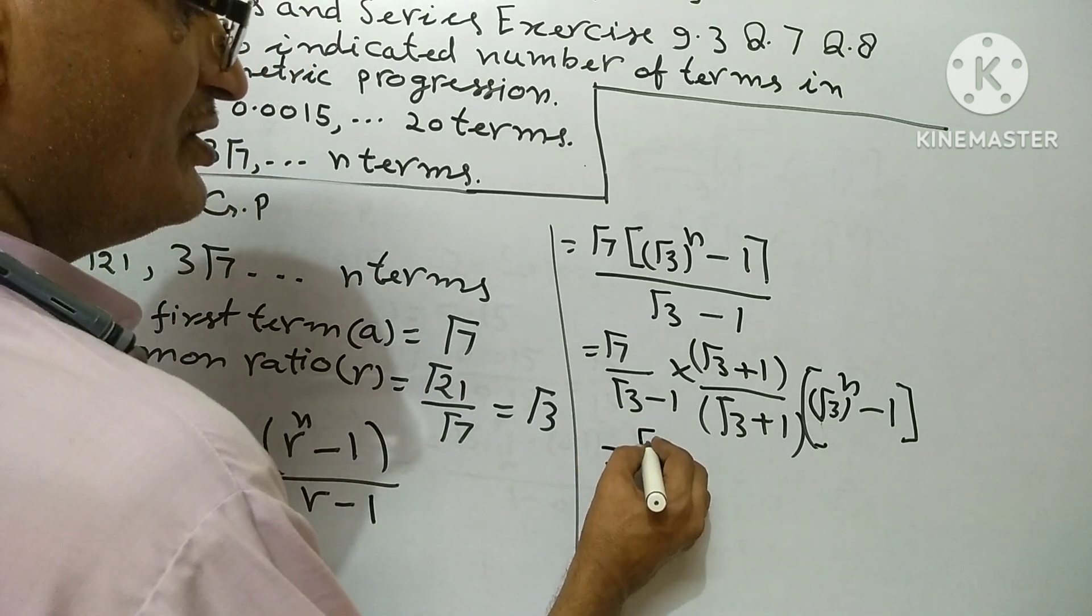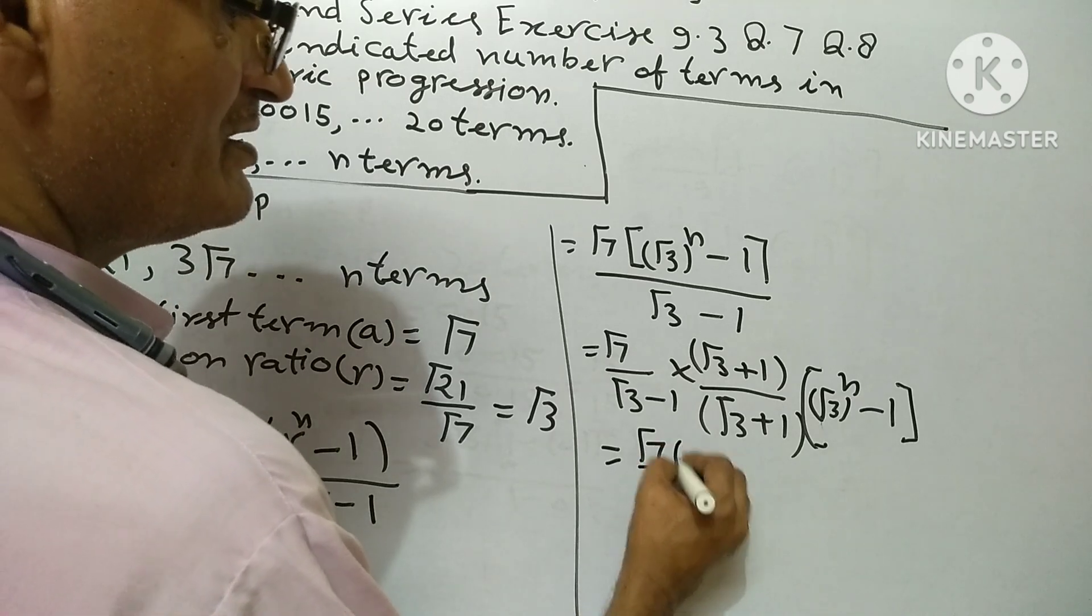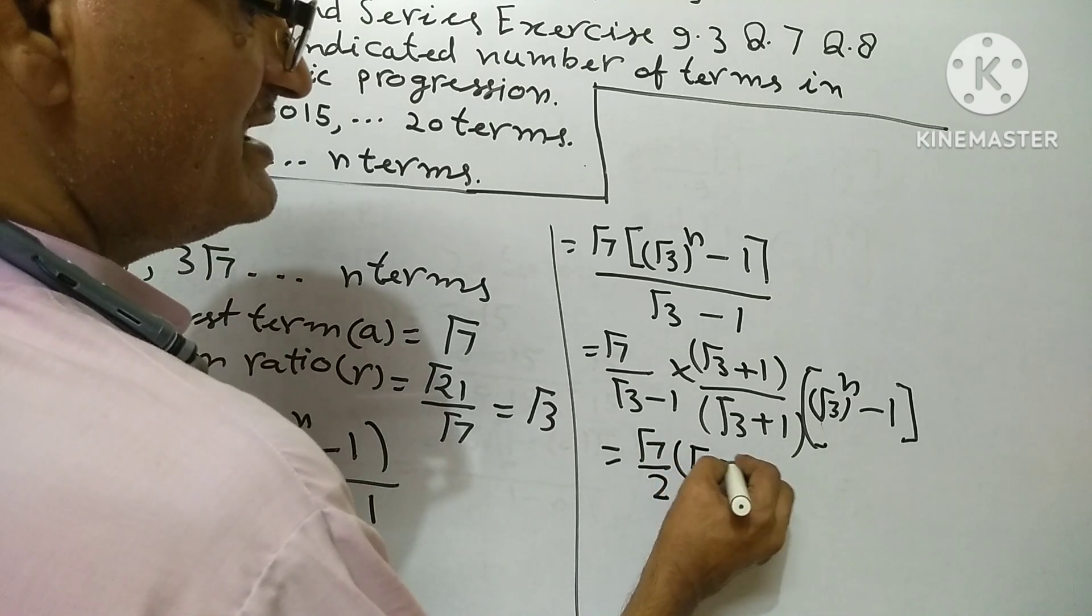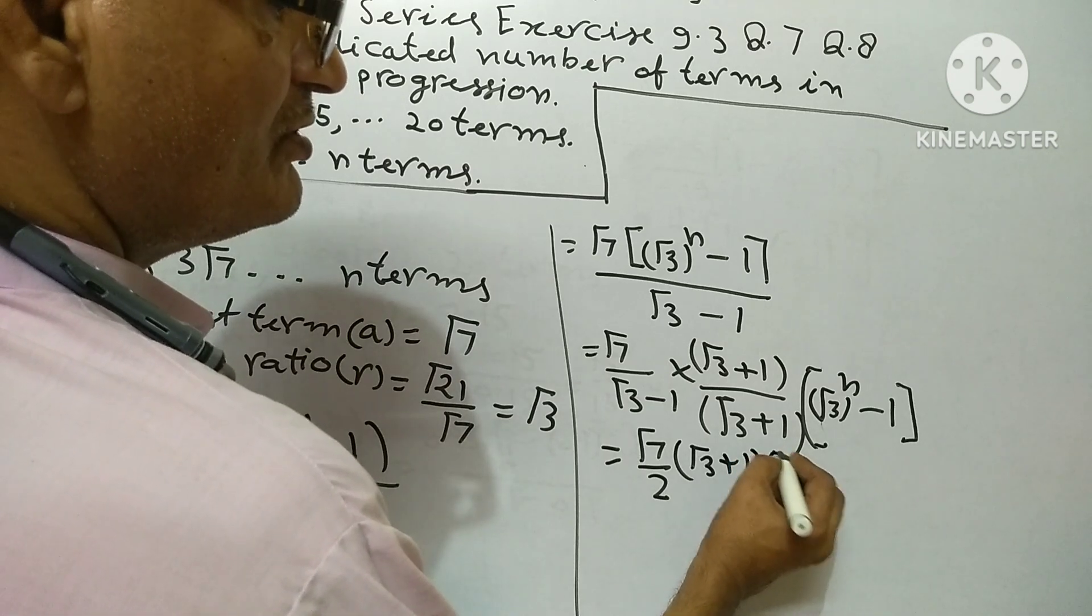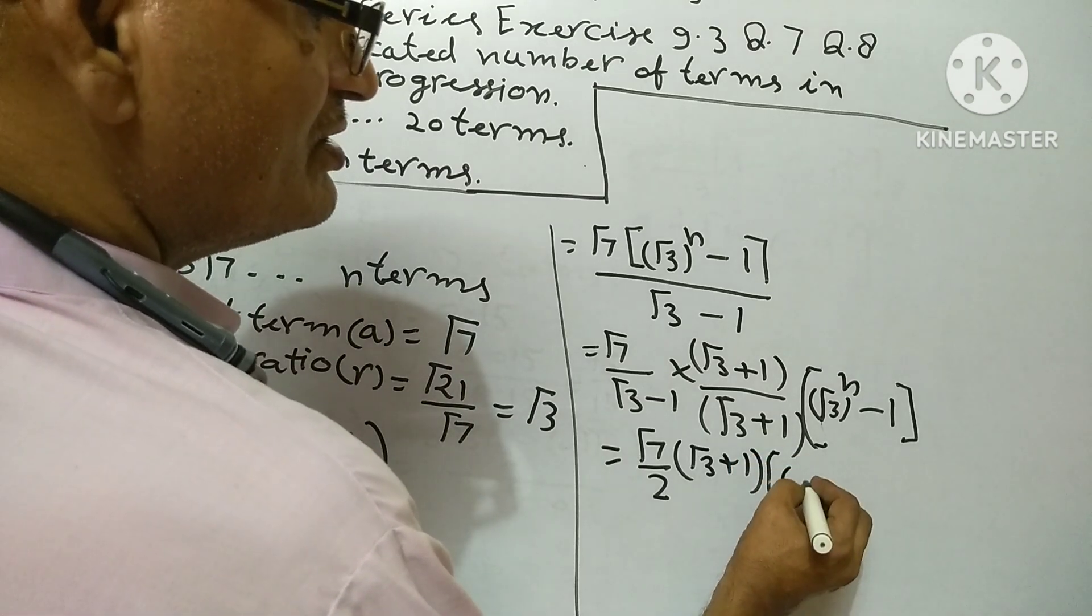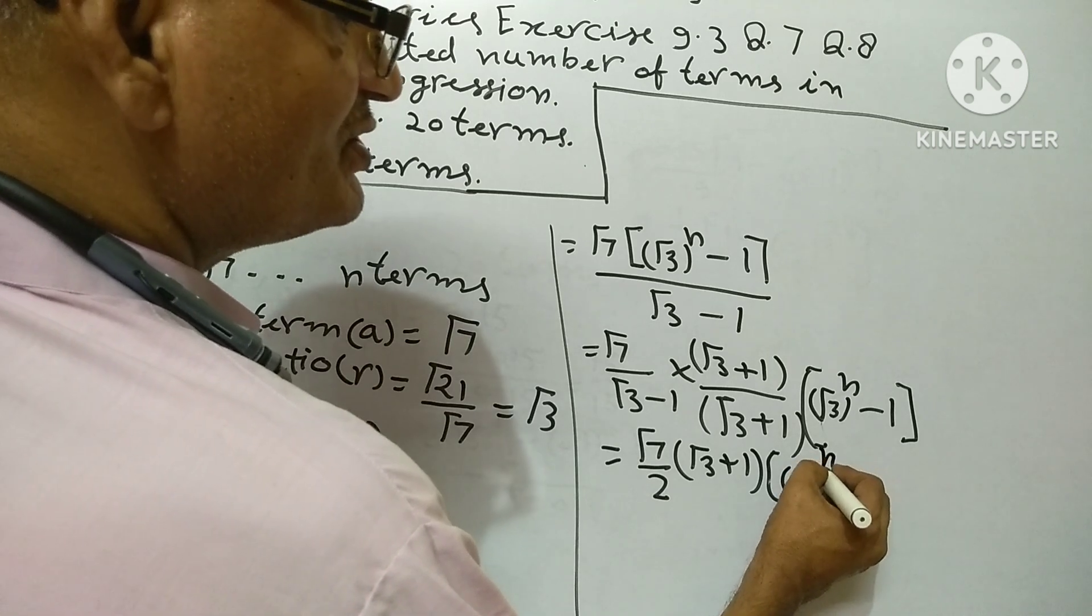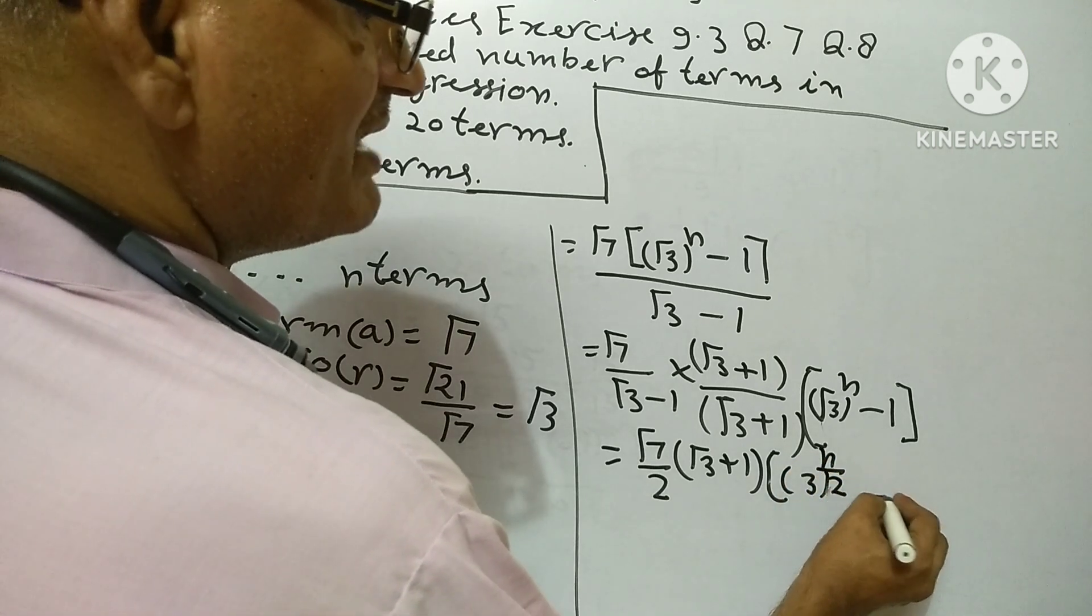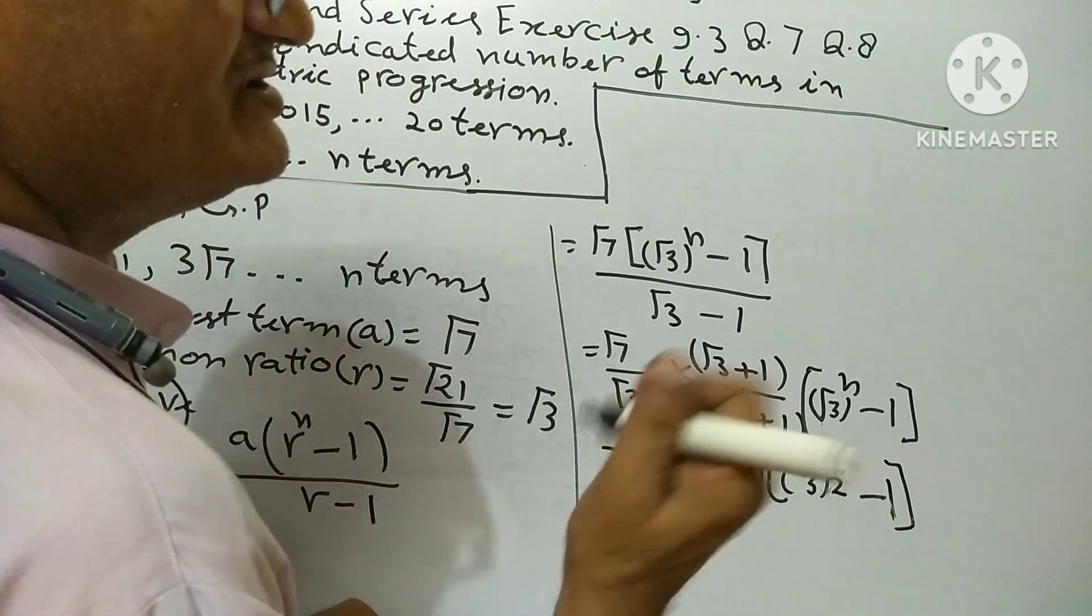Equals root 7 upon root 3 plus 1 into 3 to the power n upon 2 minus 1. This is the solution.